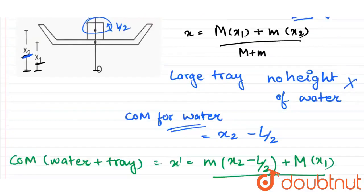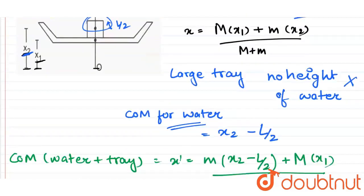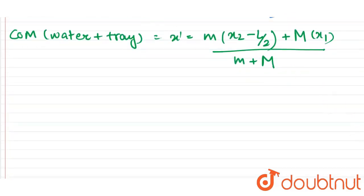Now question has asked how far does the center of mass of the system ice plus tray come down, so we need to find the difference between these center of mass. So question is asking for x minus x dash.